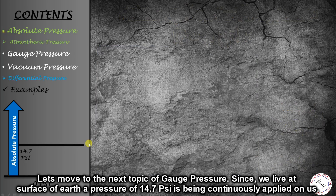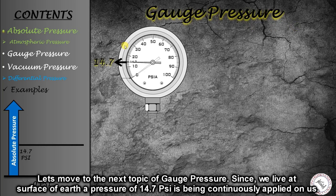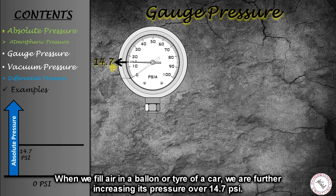Now we go to the second pressure scale: gauge pressure. Because we live on the surface of the Earth, close to sea level, we always have atmospheric pressure of 14.7 psi continuously applied all the time. When we increase the pressure of something, such as a car tire, motorcycle tire, or a balloon, the pressure increases further from 14.7 psi.